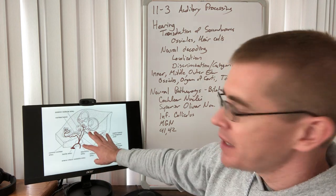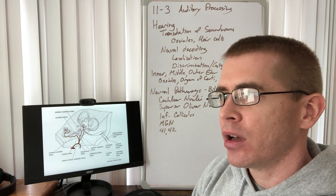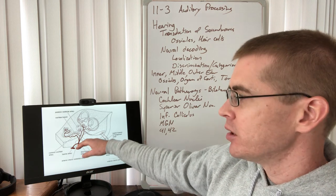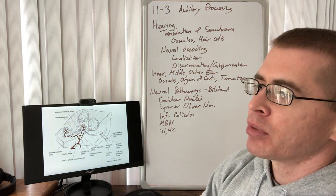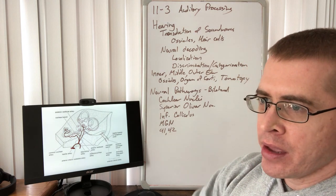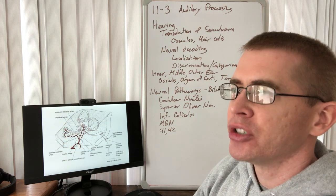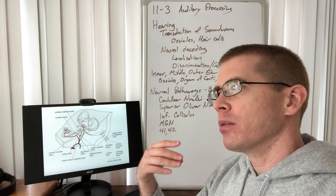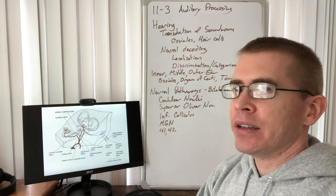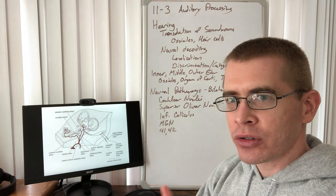All of these inner ear structures have a blood supply: the anterior inferior cerebellar branch of the basilar artery supplies the cochlea. These are very small branches, and as we age, blood supply to the structures around the ossicle degenerates. That is one way we can lose hair cells and lose hearing at certain frequencies.